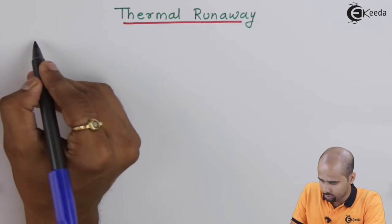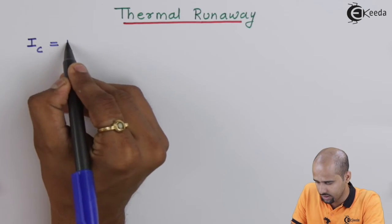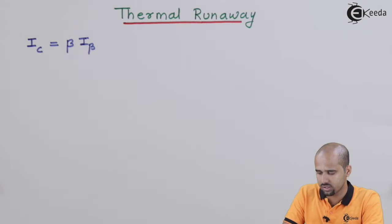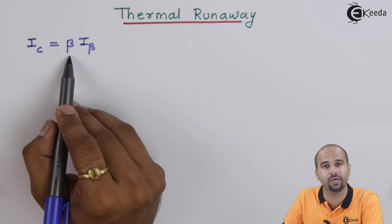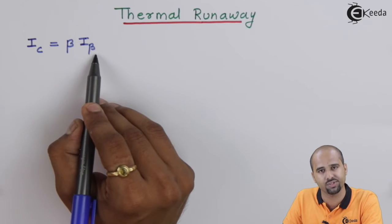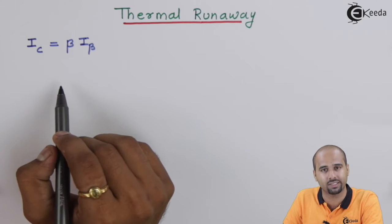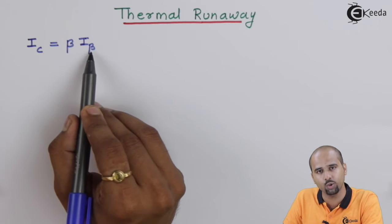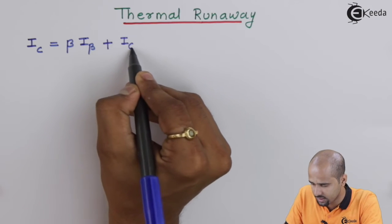I know that the relation between Ic and Ib is given by beta. This simple equation holds because beta is the common emitter current gain, where Ic is the output current and Ib is the input current. But in the practical case, Ic is equal to beta into Ib plus Ico.